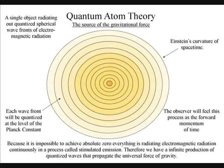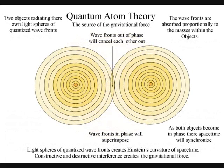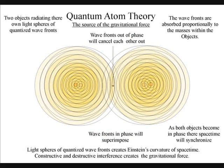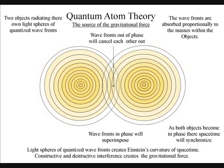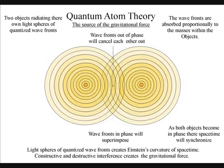Everything is radiating light spheres of quantized wavefronts. When the wavefronts of two spheres come in contact, we will have destructive interference, and the wavefronts out of phase will cancel each other out.